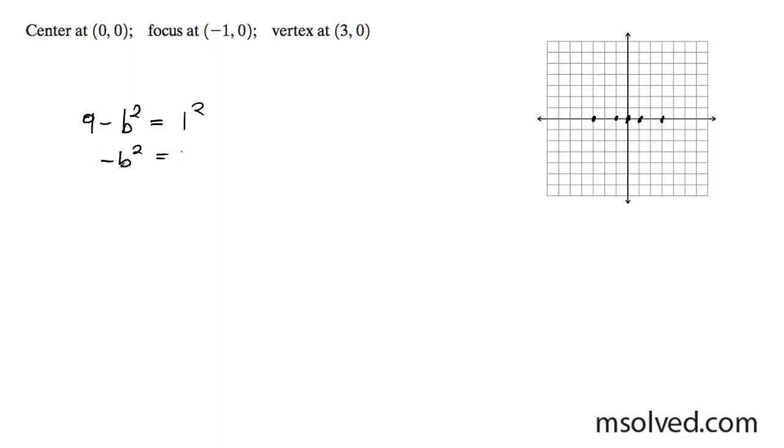Alright, so negative b squared equals negative 8. b squared equals 8. b equals the square root of 8, which is 4 times 2. Pull out that 4, we get 2 root 2.